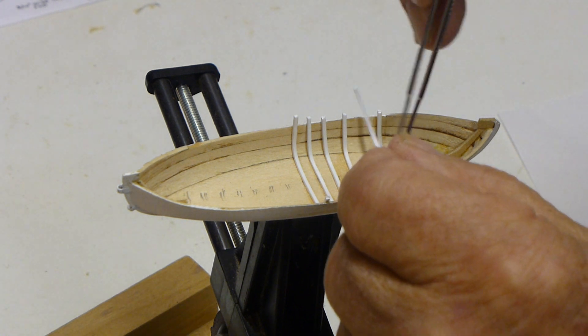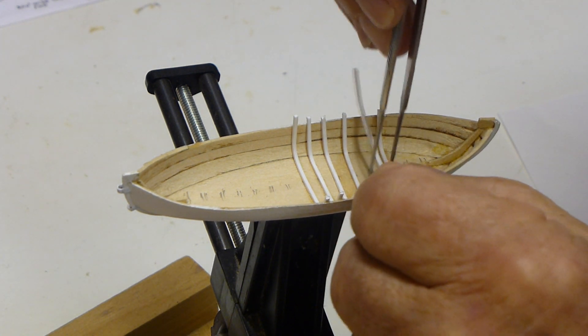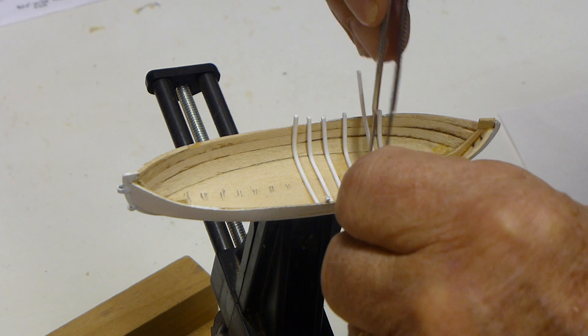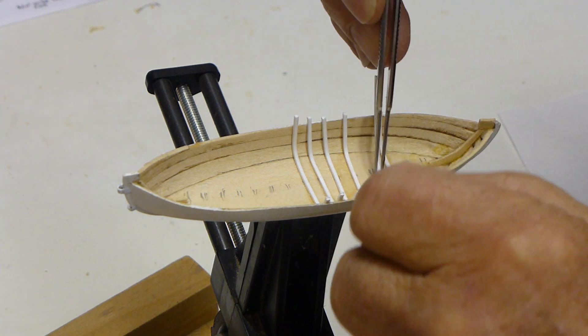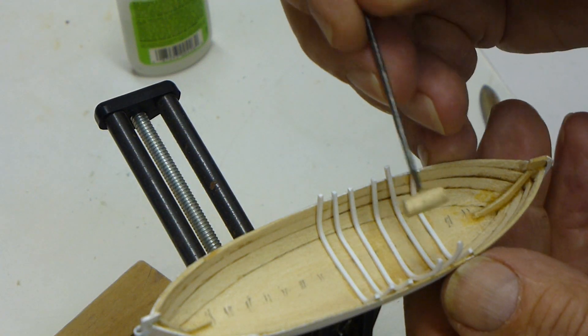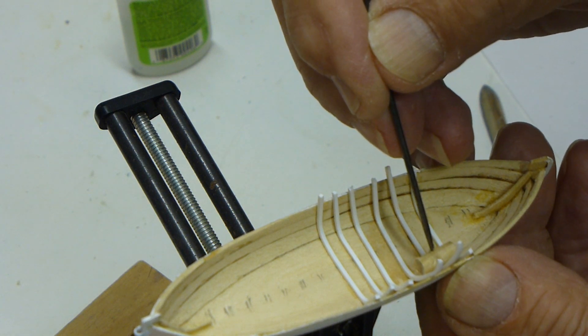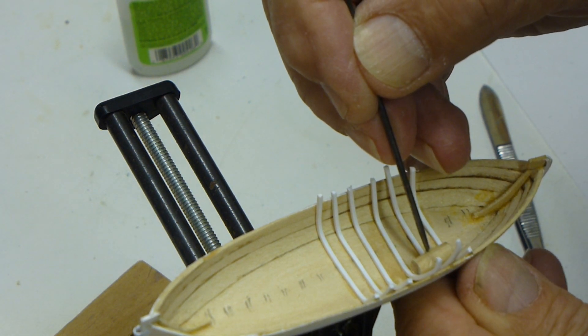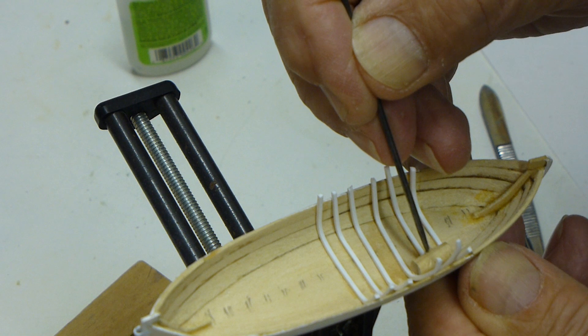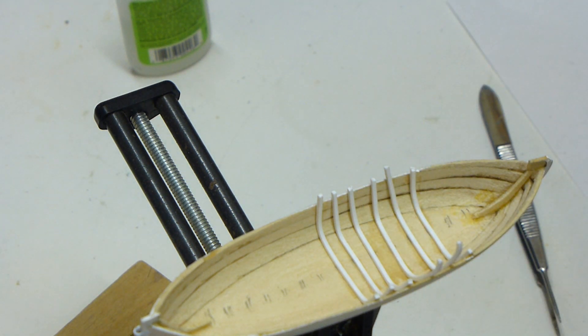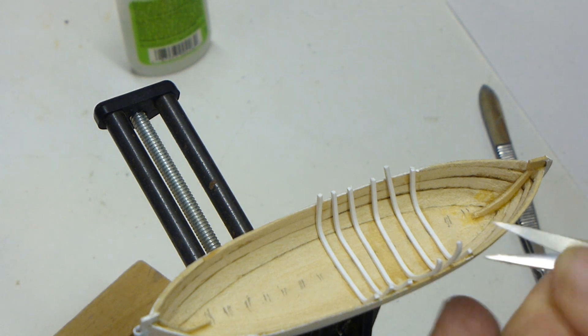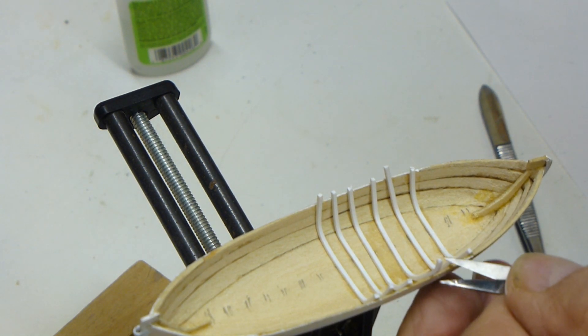I used some CA glue for putting them in position. After that was done, I actually used this little piece of dowel to press the frames into position with the glue not quite set yet. Then after that was done, I trimmed off the excess right flush with the top of the rail.